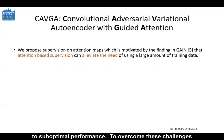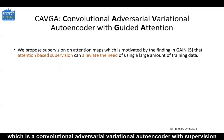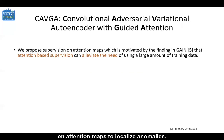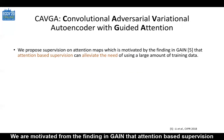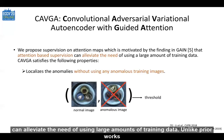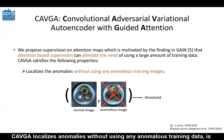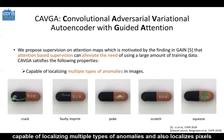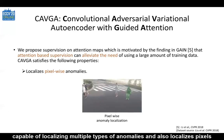To overcome these challenges, we propose CAVGA, which is a Convolutional Adversarial Variational Autoencoder with supervision on attention maps to localize anomalies. We are motivated from the findings in GAN that attention-based supervision can alleviate the need of using large amounts of training data. Unlike prior works, CAVGA localizes anomalies without using any anomalous training data, is capable of localizing multiple types of anomalies, and also localizes pixel-wise anomalies.